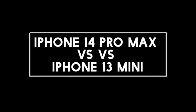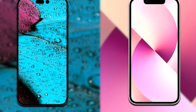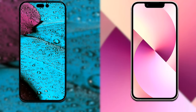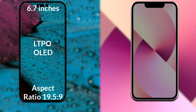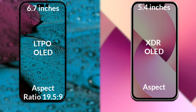I will compare the new iPhone 14 Pro Max with the iPhone 13 Mini. Let's talk about the display. The iPhone 14 Pro Max has a 6.7-inch Full HD LTPO OLED display with an aspect ratio of 19.5:9. The iPhone 13 Mini has a 5.4-inch Full HD XDR OLED display with an aspect ratio of 19.5:9.